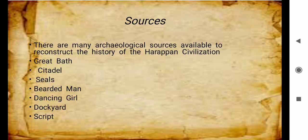Sources can be classified into two categories: archaeological and literary. Our information about the Harappan Civilization is mainly based on archaeological sources. These are the Great Bath, Citadel, Seals, Statue of Bearded Man, Statue of Dancing Girl, Dockyard, their towns, their residential houses, their drainage system, their streets, and the only literary source available is its script.